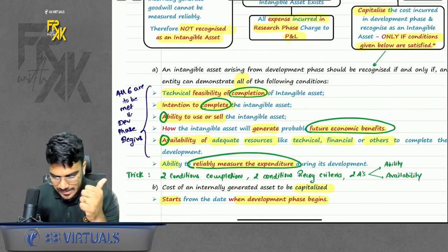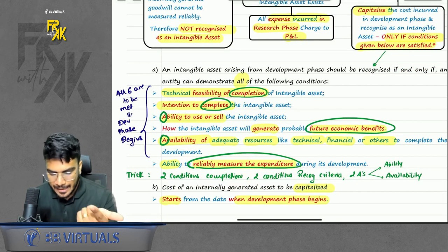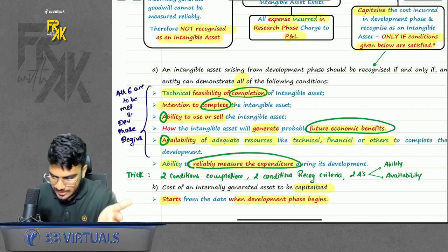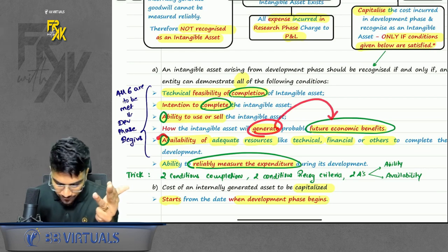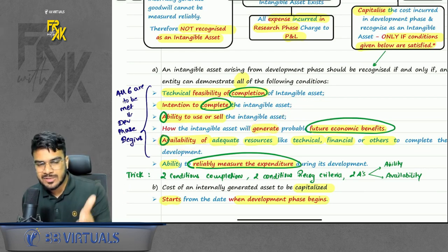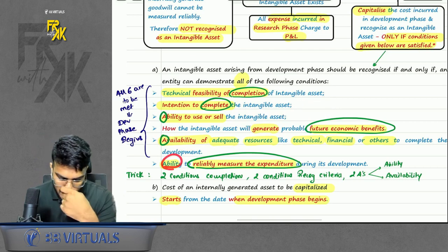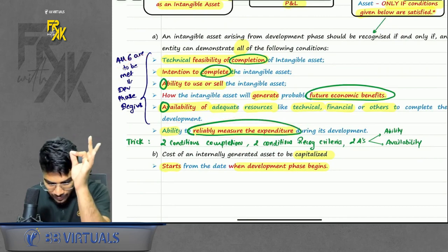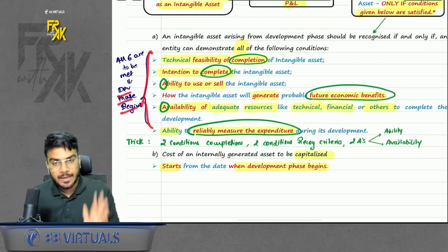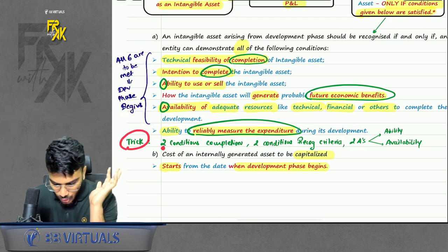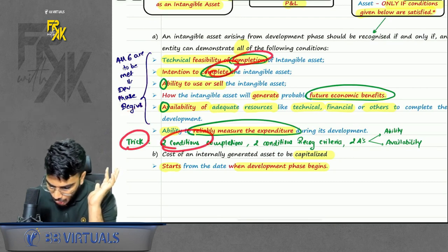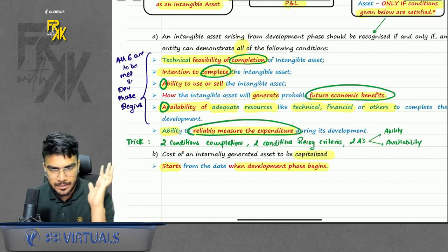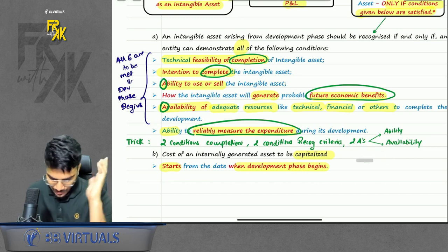The six conditions are: first, technical feasibility of completion; second, intention to complete; third, ability to use or sell the intangible asset; fourth, demonstrate how it will generate future economic benefit; fifth, availability of adequate resources like technical, financial, etc.; and sixth, ability to reliably measure the expenditure. All six must be met — on the date when all six are met, the development phase begins. A trick to remember: two conditions are of completion, two are basically recognition criteria, and two start with 'A' — Ability and Availability.